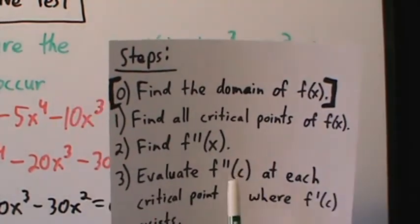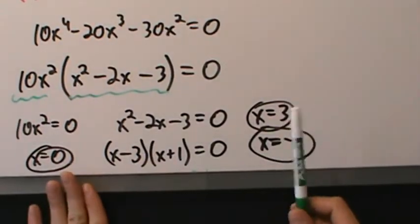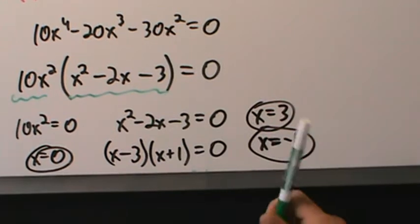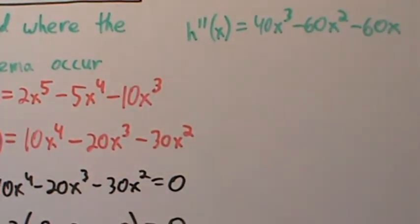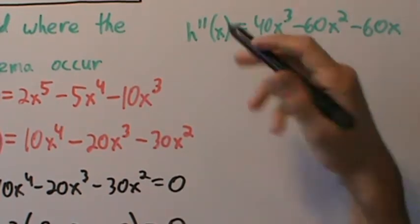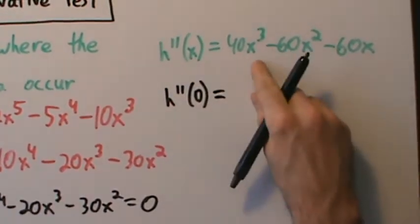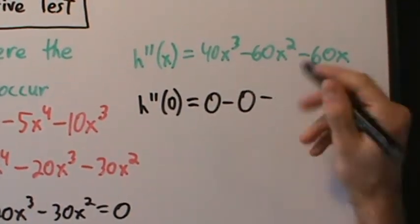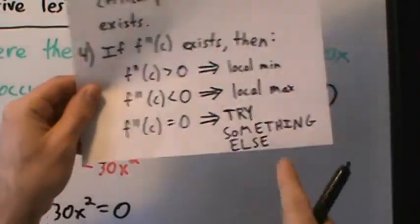Step three: evaluate the second derivative at each critical point where the first derivative exists. We have three critical points and the first derivative exists at all three, so no worries about undefined values. Starting with x equals 0: h double prime of 0 is 40 times 0 cubed minus 60 times 0 squared minus 60 times 0, which equals 0. And if you're thinking ahead, yes, that's bad — we'll talk about that shortly.